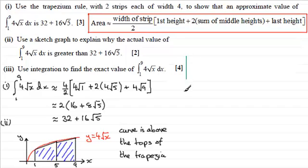Now for part 3 it says use integration to find the exact value of the integral then of 4√x with respect to x between x equals 1 and x equals 9.